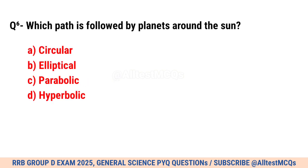Question No. 6. Which path is followed by planets around the sun? Correct option is B. Elliptical.